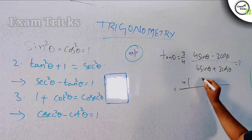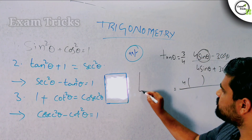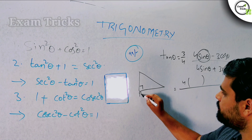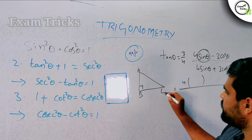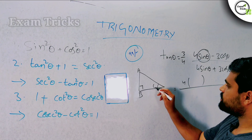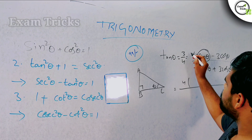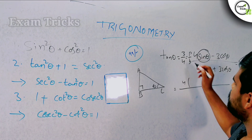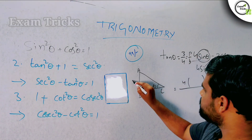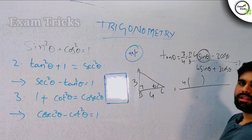So, in a right-angle triangle with sides a, b, c — the angle is 90 degrees at B and θ is at one vertex. The tanθ value is 3 by 4. Since tanθ equals perpendicular by base, we use perpendicular value 3 and base value 4. Now we need to find the hypotenuse value.